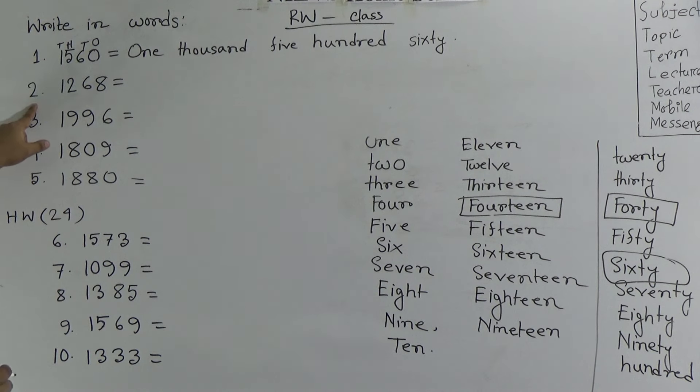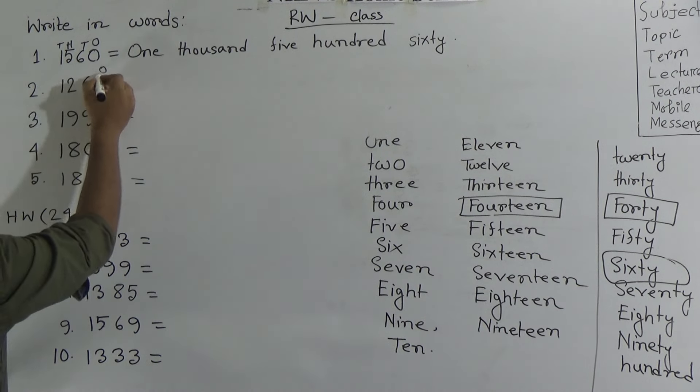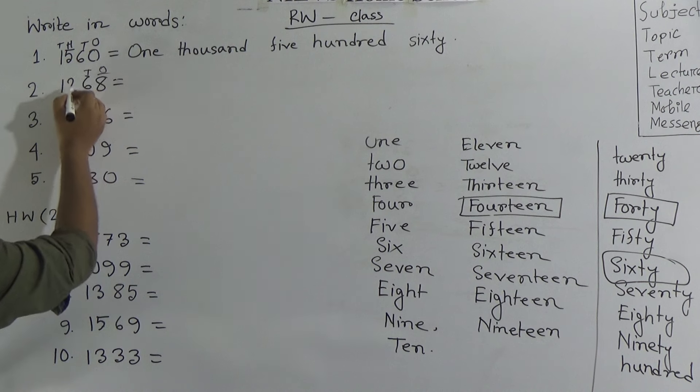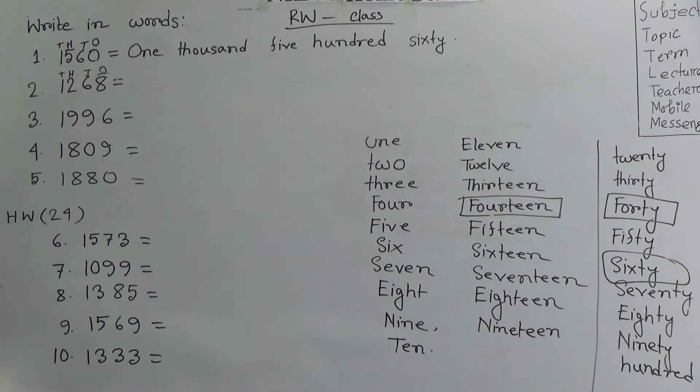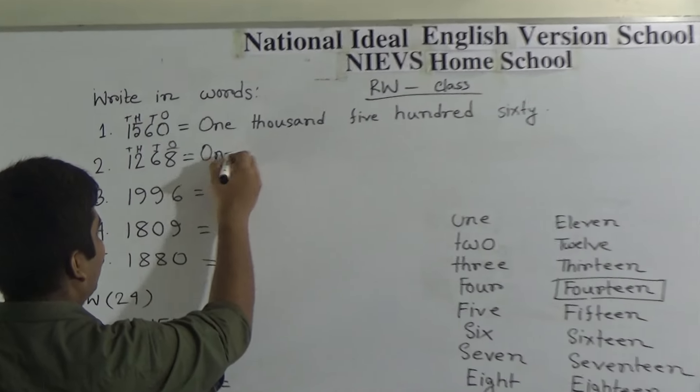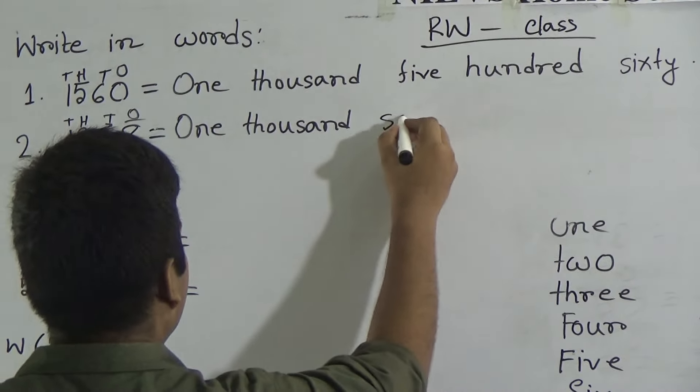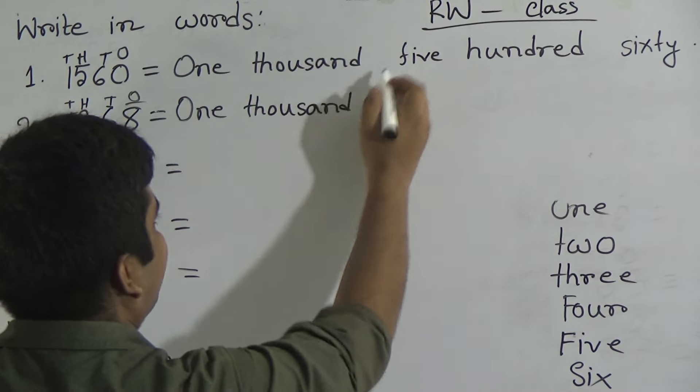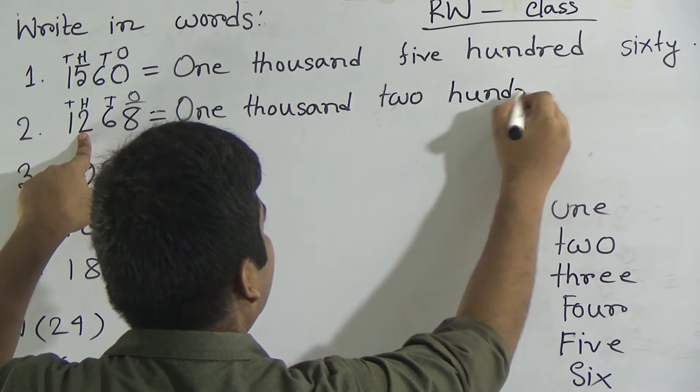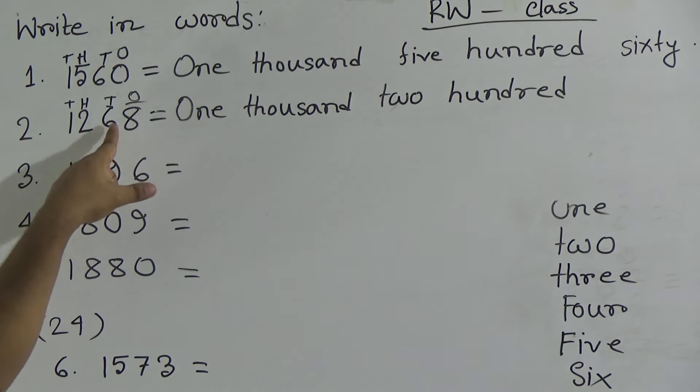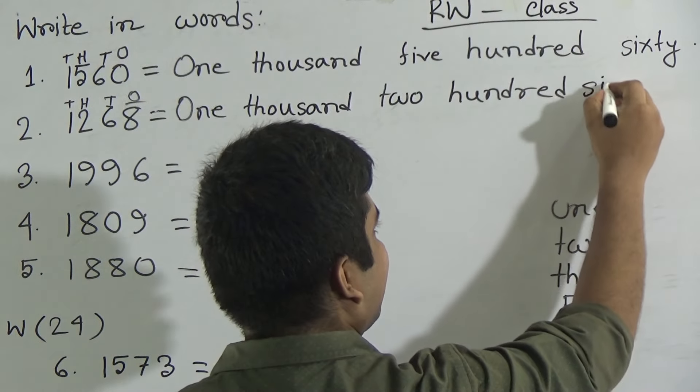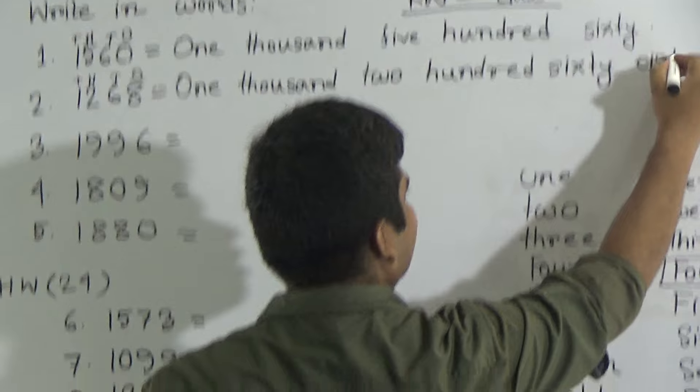Similar way we shall write the second one here 1268. First of all we write the place name here: 8 is in ones place, 6 is in tens place, 2 is in 100 place and 1 is in 1000 place. So we read this number as 1268. So I write 1000 that means O-N-E 1000 T-H-O-U-S-A-N-D, 200, then 268, so write 60 S-I-X-T-Y, 68.